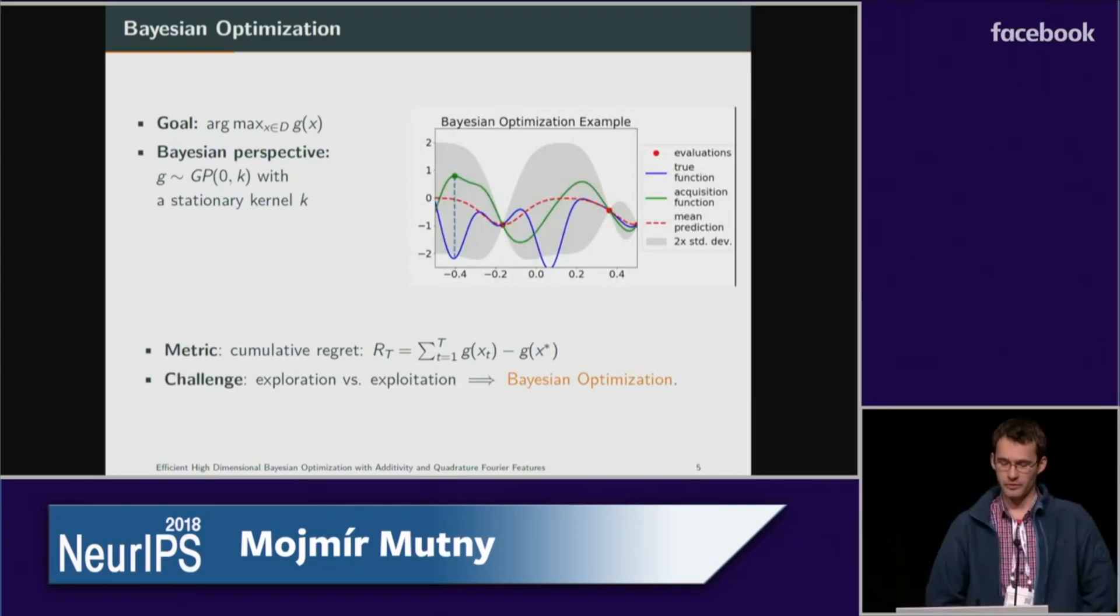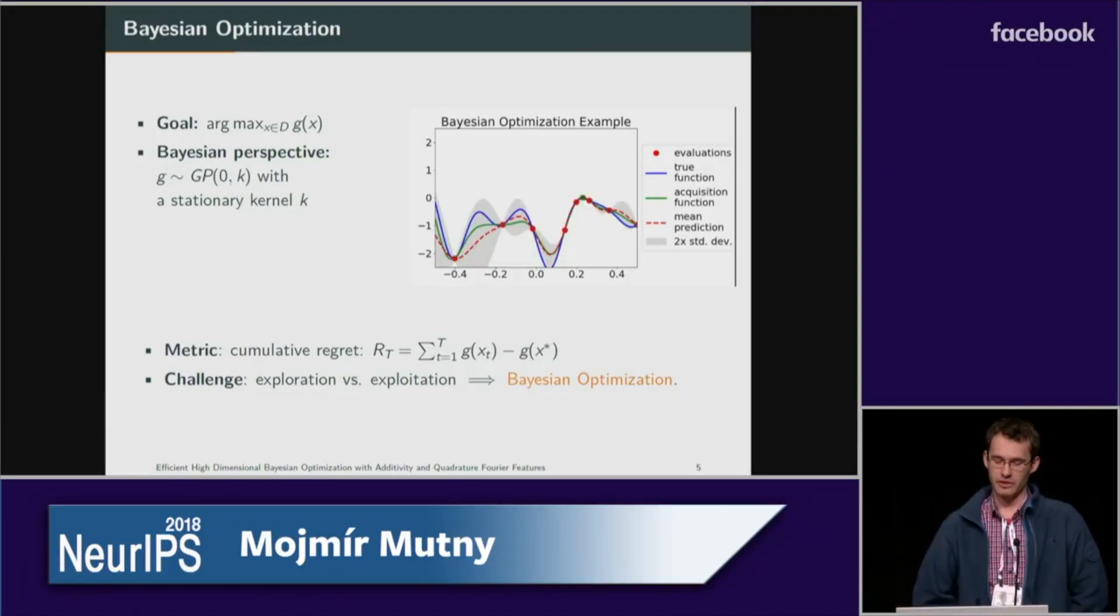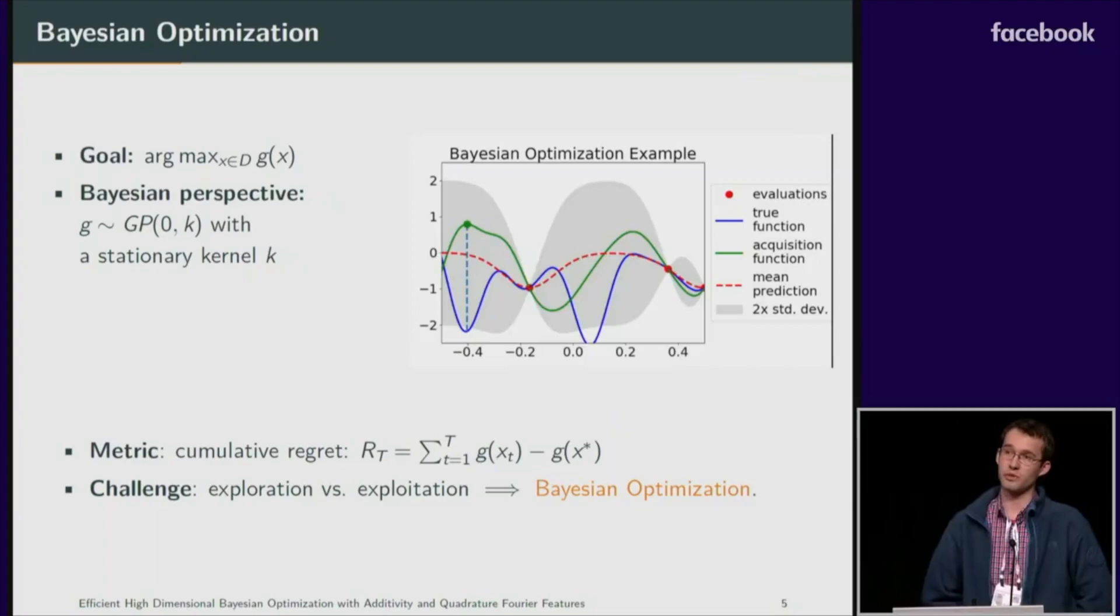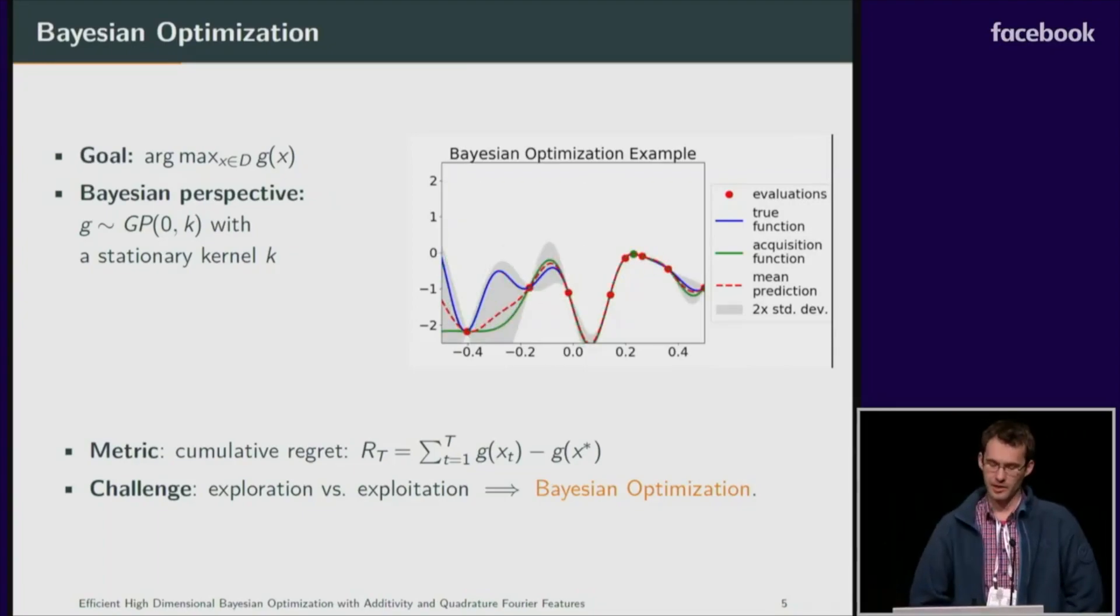The key challenge here is that you want to explore the function in unknown domains but yet at the same time look in the domains where potentially a maximizer can be found. In order to solve this dilemma, we resort to the framework of Bayesian optimization which defines a sequential decision problem where the next decision is based on a maximum of so-called utility functions, sometimes known as acquisition functions.